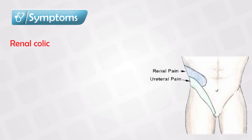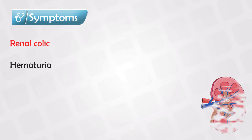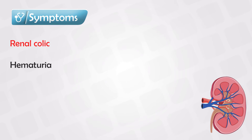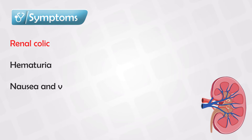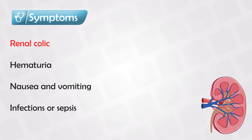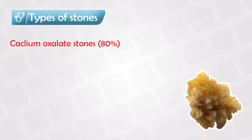Unless the patient is very unlucky and has bilateral stones in both kidneys. It can be associated with hematuria — as the stone goes down the ureter it can injure the walls and cause some minor bleeding. It will also cause nausea and vomiting because of the severe pain, and if left untreated for some time it will cause sepsis and infection. There are many different types of stones and some of them have different presentations.